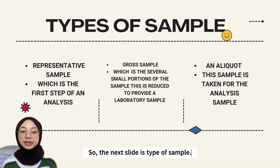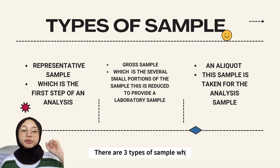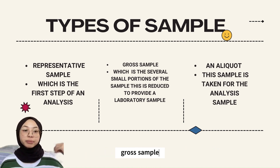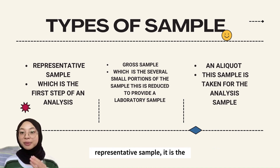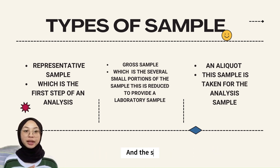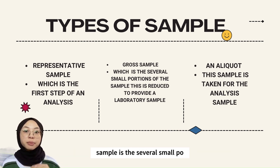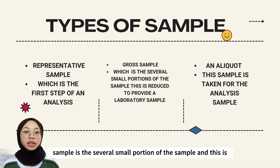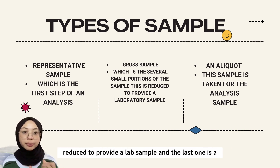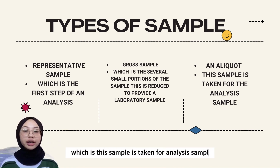The next slide is the types of sample. There are three types of sample: the representative sample, the gross sample, and the last one is an aliquot. The representative sample is the first type of analysis. The gross sample consists of several portions of the sample and is reduced to provide a lab sample. The last one is an aliquot, which is the sample taken for analysis.